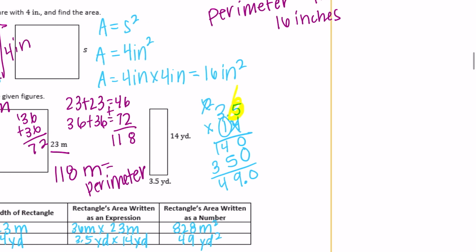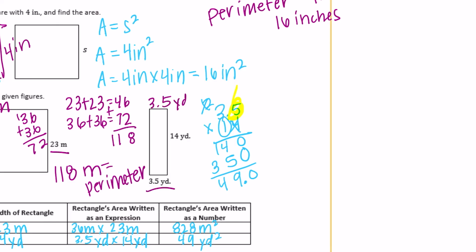And let's do this last one. This is three and five tenths, so then this is also three and five tenths yards. This is fourteen yards, so we need to do fourteen times two, and three and a half times two, and then add them together.